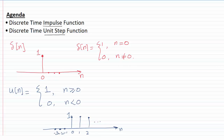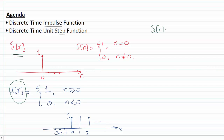Now one may ask: is there a way to write delta of n, the impulse function, as a function of the unit step? That is, is there a way to write an impulse as a function of u of n?